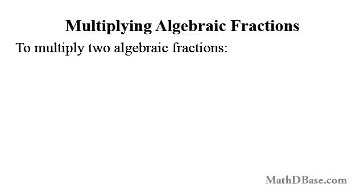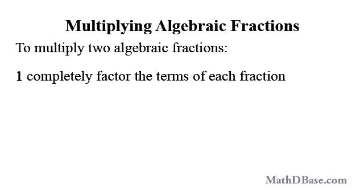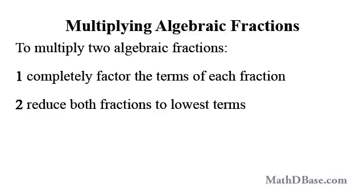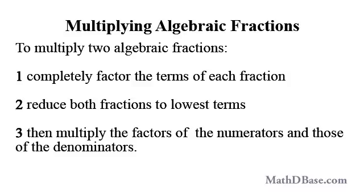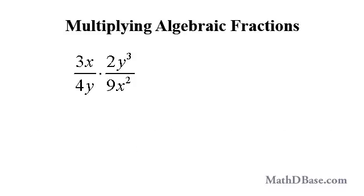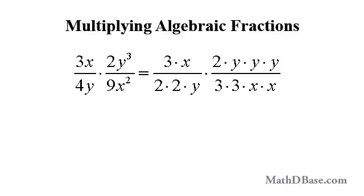To multiply two algebraic fractions: first, completely factor the terms of each fraction. Reduce both fractions to lowest terms, and then multiply the factors of the numerators and those of the denominators. For example, to multiply 3x over 4y by 2y cubed over 9x squared, write each number as the product of its prime factors if necessary, multiplied by the product of the factored variables in each term.